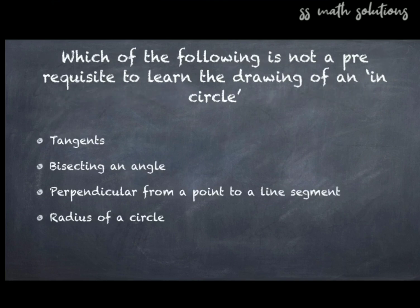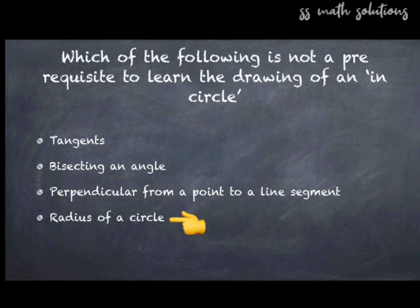Question 4: Which of the following is NOT a prerequisite to learn the drawing of an in-circle? Options: tangents, bisecting an angle, perpendicular from a point to a line segment, radius of a circle. Tangents, bisecting an angle, and perpendicular from a point to a line segment are all needed to draw an in-circle, but radius of a circle is not. The answer is option 4 — radius of a circle.